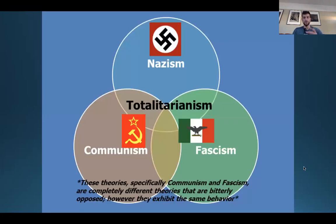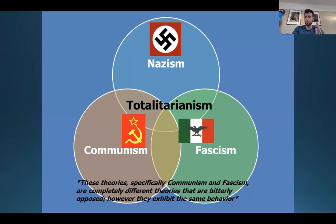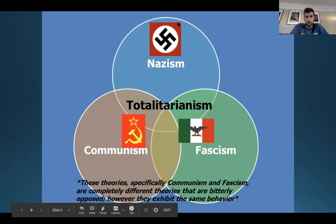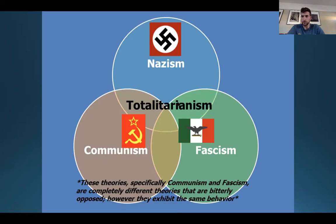This just kind of shows you the Venn diagram. Between communism, fascism, and Nazism, there are a lot of different isms we talk about, and I don't want to overwhelm you. But Nazism is going to be more specific to Nazi Germany, fascism more specific to Italy, and communism more specific to the Soviet Union. They're going to kind of layer over each other in Venn diagram-type ways.